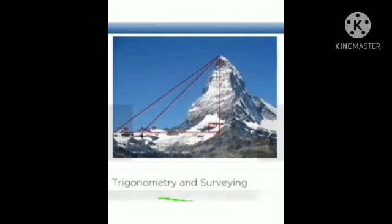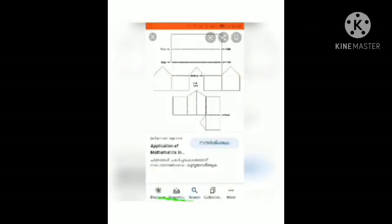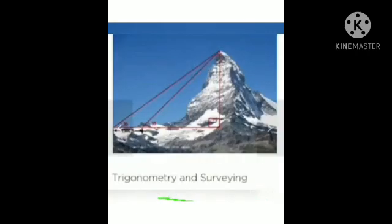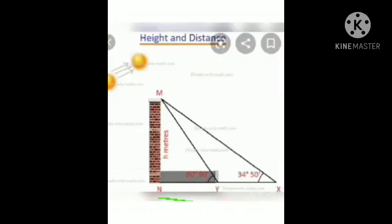The sine and cosine functions are fundamental to the theory of periodic functions, which describe sound and light waves. Calculus is built on trigonometry and algebra. Trigonometry can be used to make the roof of a house inclined. It is used in naval and aviation industries, in cartography, and trigonometry has its applications in satellite systems.